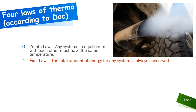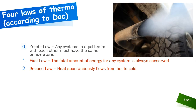The second law of thermodynamics says heat spontaneously flows from hot to cold — we've seen this before in studying thermal systems. This is the direction of heat transfer between an object of higher temperature and an object of lower temperature. The third law says it is impossible to reach absolute zero temperature.